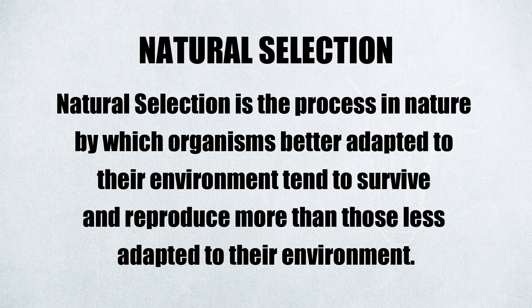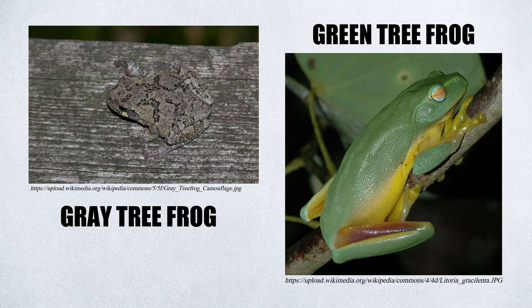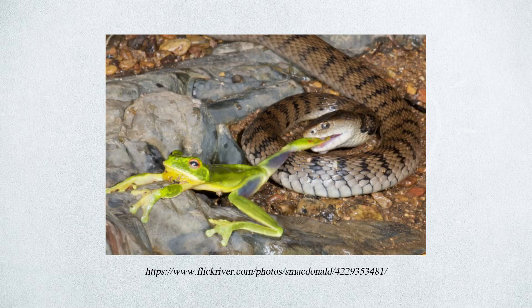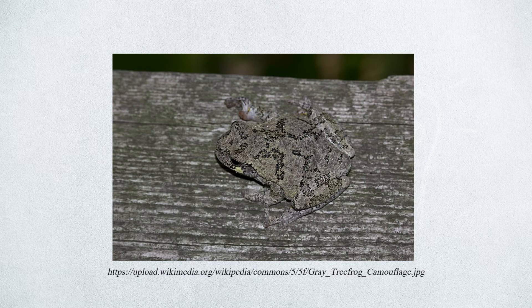Natural selection is the process in nature by which organisms better adapted to their environment tend to survive and reproduce more than those less adapted to their environment. For example, consider a gray and a green tree frog in dark-wooded areas on tree bark. Gray tree frogs blend well in dark-wooded areas compared to the green tree frog, making the green tree frog easier for predators to find. Tree frogs that have been eaten do not live to have any more baby tree frogs; therefore, natural selection has favored tree frogs that are more camouflaged in their habitat.